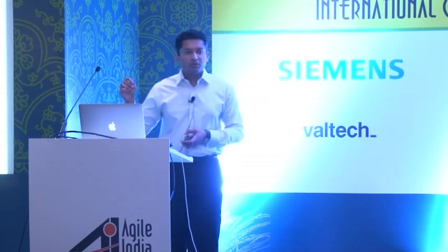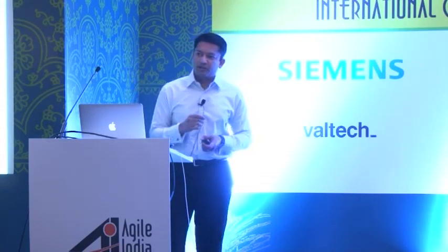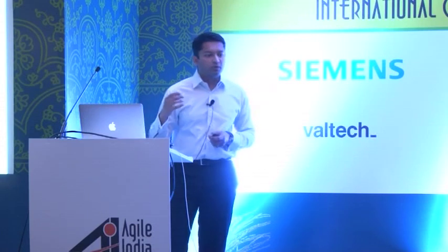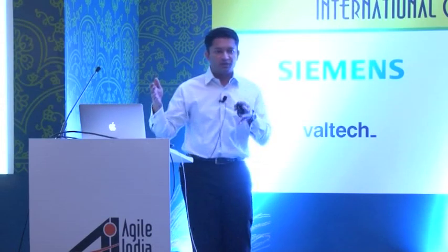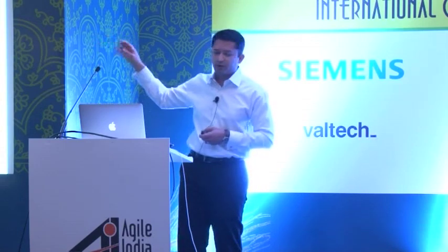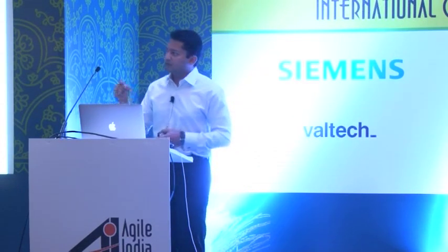Traditionally, someone in a product manager role will go and plan out the next year's worth of releases — all the features in the backlog get put into different buckets: release 1.0, 2.0, 3.0 — and you plan out the whole year. But all that is predicated on the fact that we actually know what customers will really want. The more lean approach is to go out with the minimum viable product as quickly as possible and put that in the hands of customers, because that's where the real learning is going to start.